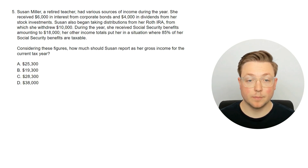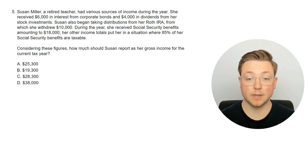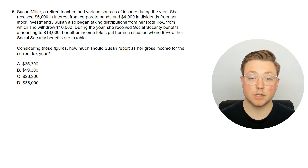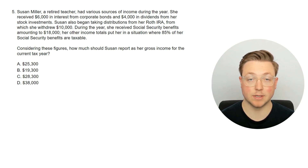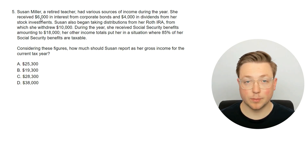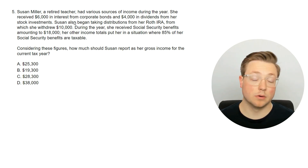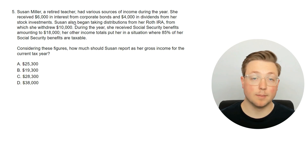Here's the next question. Susan Miller, a retired teacher, had various sources of income during the year. She received $6,000 in interest from corporate bonds and $4,000 in dividends from her stock investments. Susan also began taking distributions from her Roth IRA, from which she withdrew $10,000. During the year, she received Social Security benefits amounting to $18,000. Her other income totals put her in a situation where 85% of her Social Security benefits are taxable. How much should Susan report as her gross income for the current tax year?